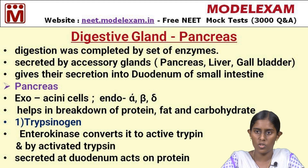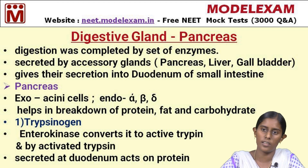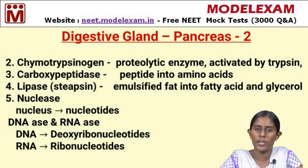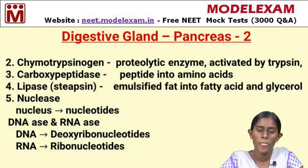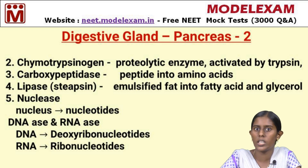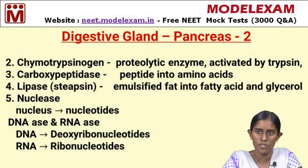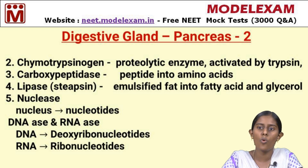The next enzyme is chymotrypsinogen. It is also a proteolytic enzyme — 'lytic' means breakdown, so proteolytic means it breaks down proteins. Chymotrypsinogen is activated by trypsin. Once trypsin is formed, it has the ability of self-initiation: it can activate other trypsinogen molecules into trypsin. This trypsin then acts on chymotrypsinogen and converts it into its active form, chymotrypsin.